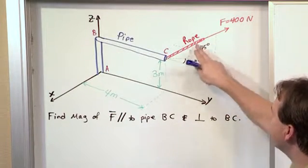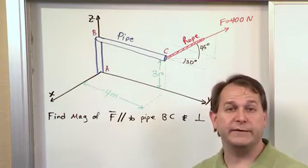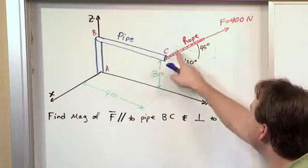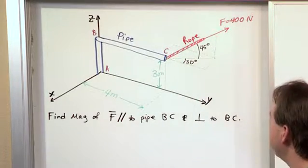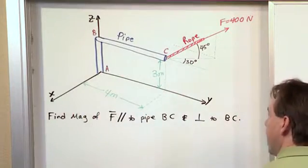So these two angles are going to be enough, even though they look a little non-standard, they're going to be enough to describe which way this vector is pointing. So we're going to be able to formulate that vector. And then we have some dimensions here telling us how everything else is laid out.